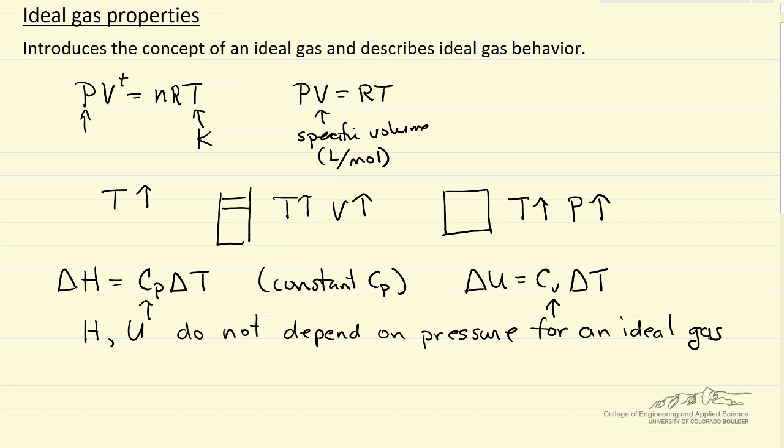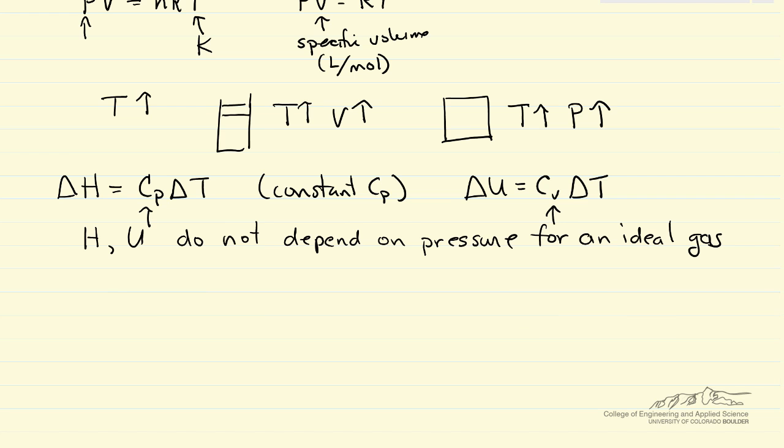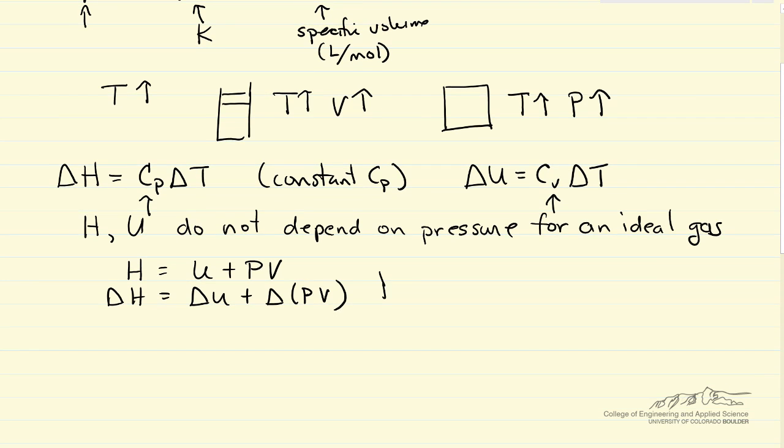So one other aspect of the values for CP and CV results because H is U plus PV, just the definition of enthalpy, so delta H is delta U plus delta PV. Keep in mind the notation here, all of these terms are per mole.